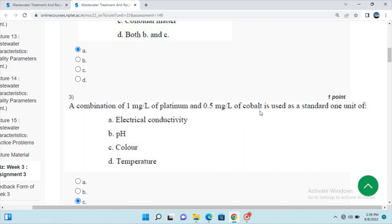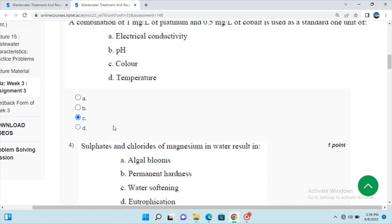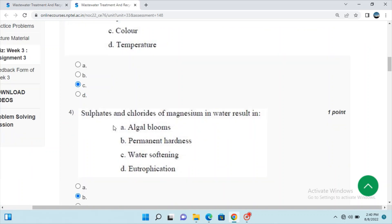Question 3: A combination of one gram per liter of platinum and 0.5 milligram per liter of cobalt is used as a standard one unit. I did not share the answer for question number 3.